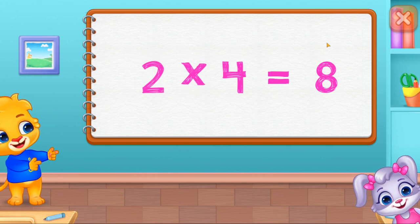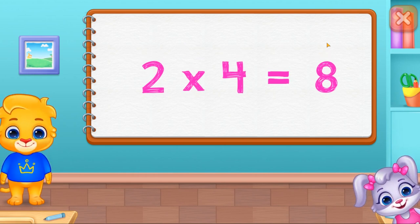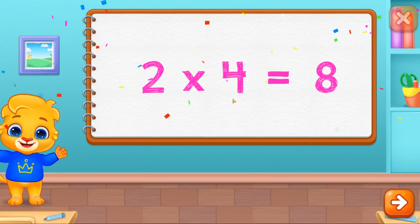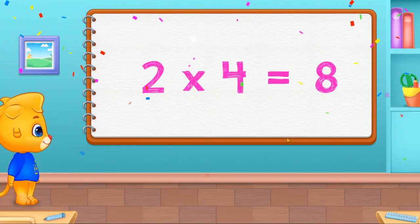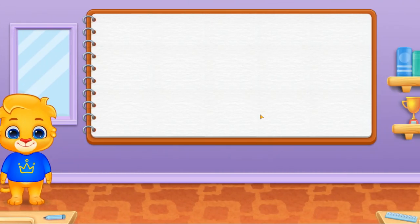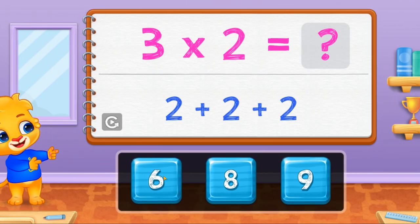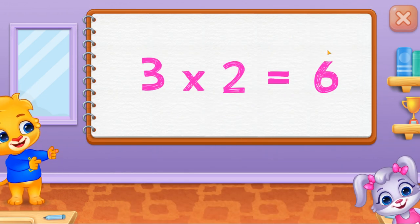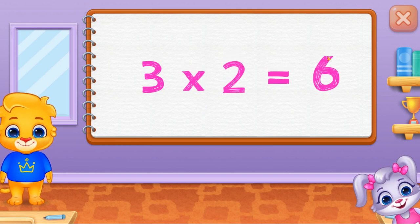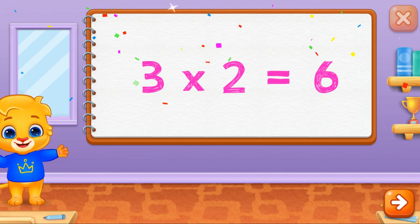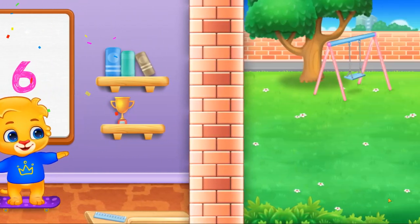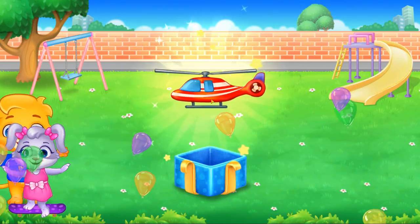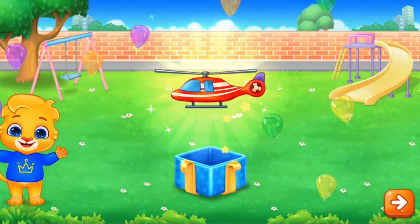Two times four equals eight. Six. Three times two equals six.